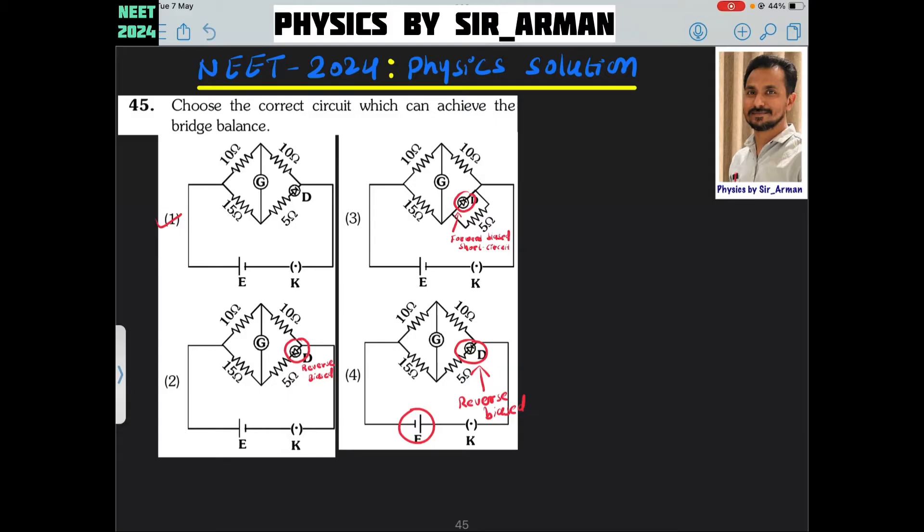Right now if you check all of these, there is no balance. They all are unbalanced. But suppose I want to achieve a balance with Wheatstone bridge by changing just the resistor, then how can I achieve this?